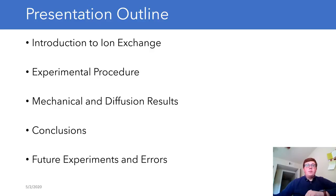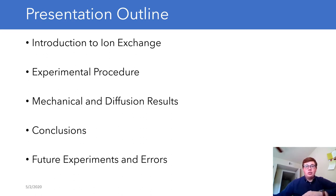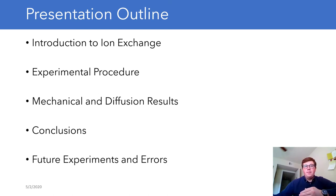First, I would like to go over my presentation, looking at the ion exchange process and the testing equipment we used for our experiments. Then, with that knowledge, looking at our hypotheses, talking through the procedure and how we ion exchanged the glass. Then looking at the data of both the mechanical strength as well as the diffusion of ions into the glass rods. And finally, concluding on how our hypotheses were supported or not, what we can experiment on in the future, and any errors we found along the way.